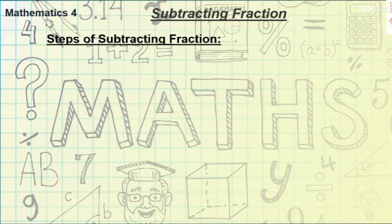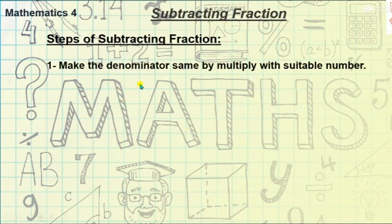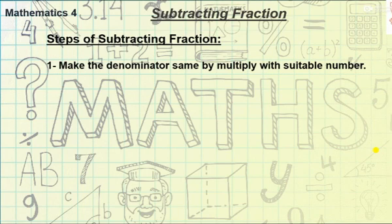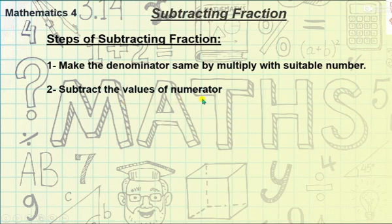Let's understand the steps of subtracting fractions. Our first step is to make the denominator same by multiplying with a suitable number — we need to make the denominators of our given fractions the same. Second step is to subtract the values of the numerator after completing the first step.